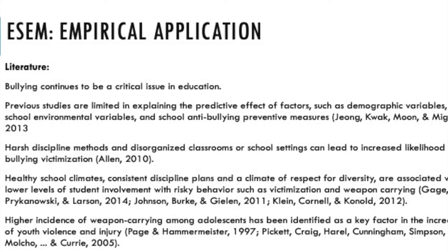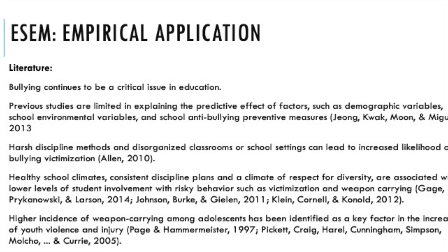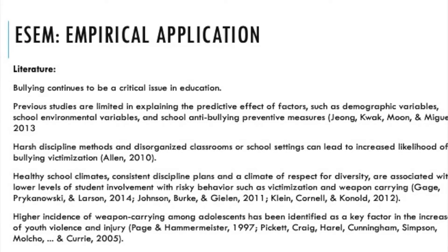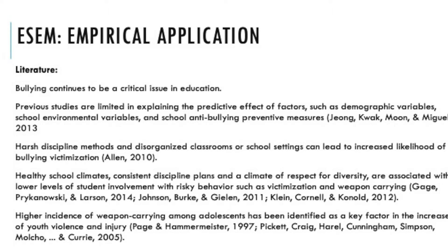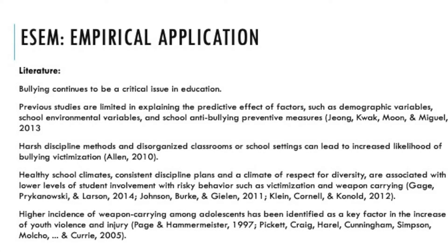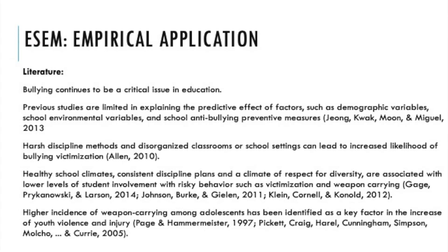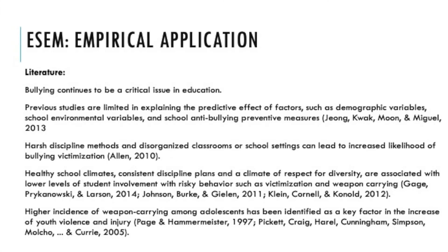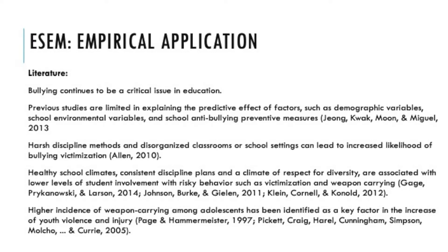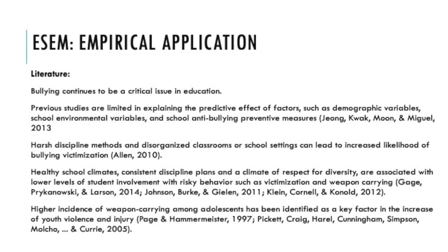Although bullying is not a new concept to educators and the public, previous studies are limited in explaining the predictive effect of specific variables, such as demographic variables, school environmental variables, and school anti-bullying preventive measures. Studies examining school safety measures and students' perceptions of school climate, especially school rules and punishment, reveal that variables such as having security guards, the fairness and awareness of school rules, gangs and guns at school, students' misbehaving, and teachers' punishment of students were statistically significant predictors of bullying victimization. Similarly, harsh discipline methods and disorganized classrooms increased the likelihood of bullying victimization. On the other hand, healthy school climates, where discipline plans were consistently applied and there was respect for diversity, were associated with a decreased prevalence of victimization and weapon carrying.